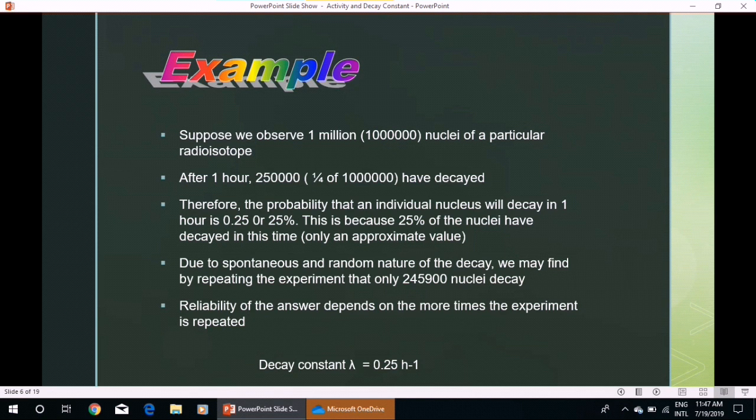Due to the spontaneous and random nature of the decay, we may find by repeating the experiment that only 245,900 nuclei decay. So, reliability of the answer depends on the more times the experiment is repeated.